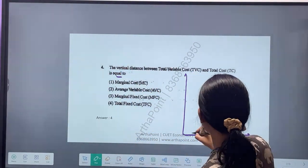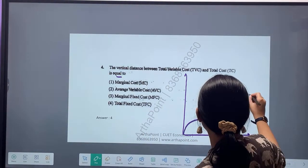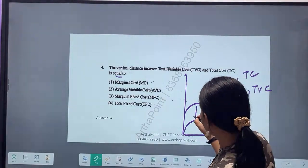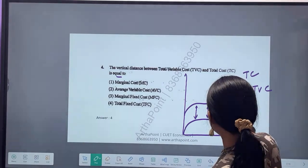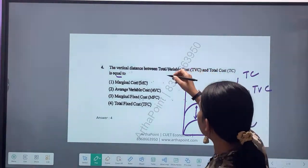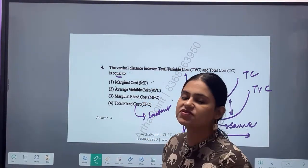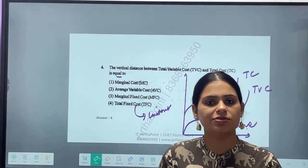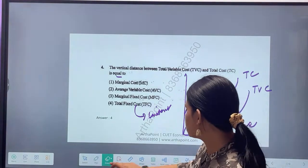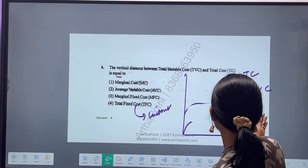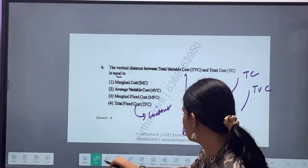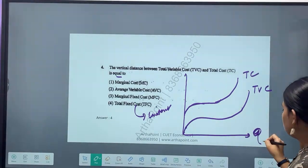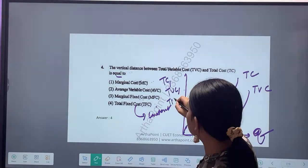For the total cost function or total variable cost, since TFC is constant, you have to keep this gap the same. This gap is nothing but TFC. Let me just focus on that. Suppose I have this curve - I have taken quantity here and I have taken TC, TVC, and TFC here as cost.